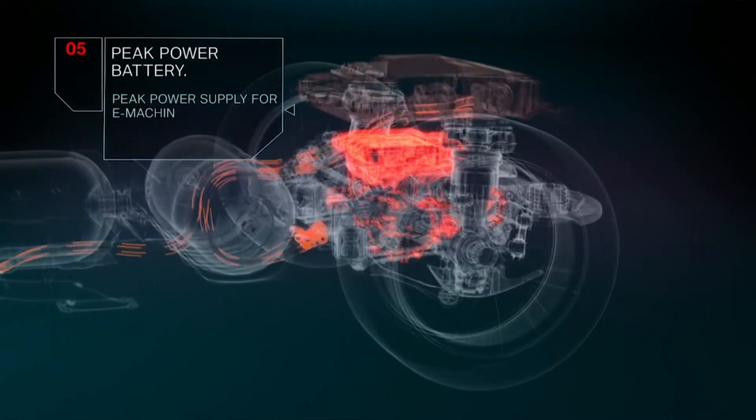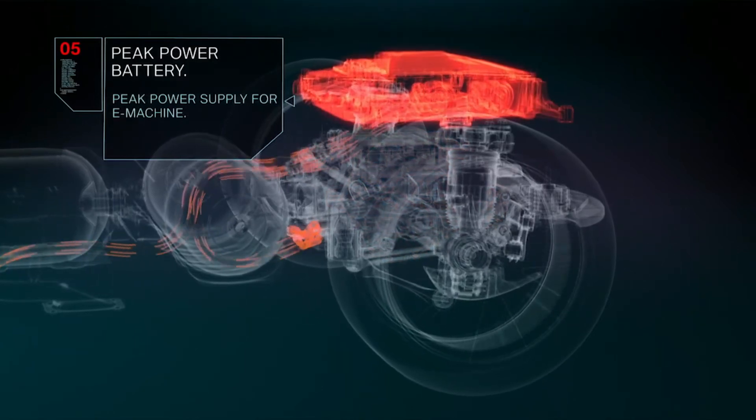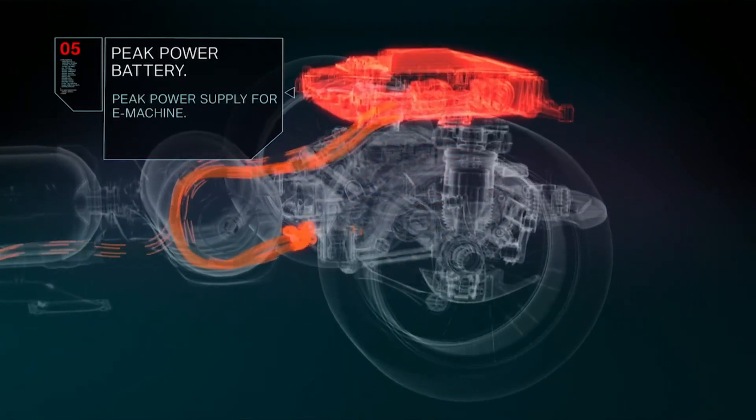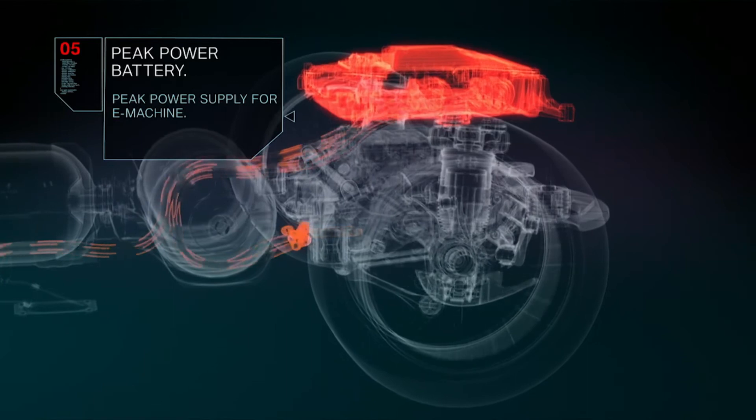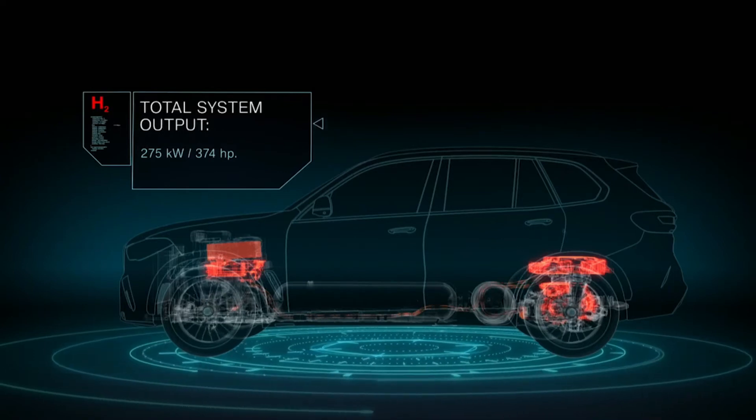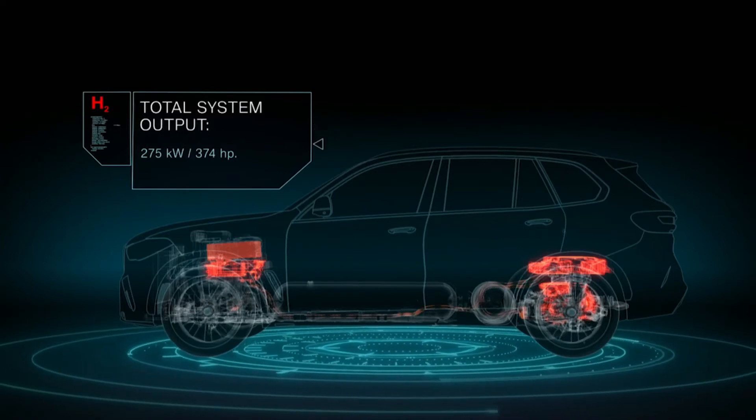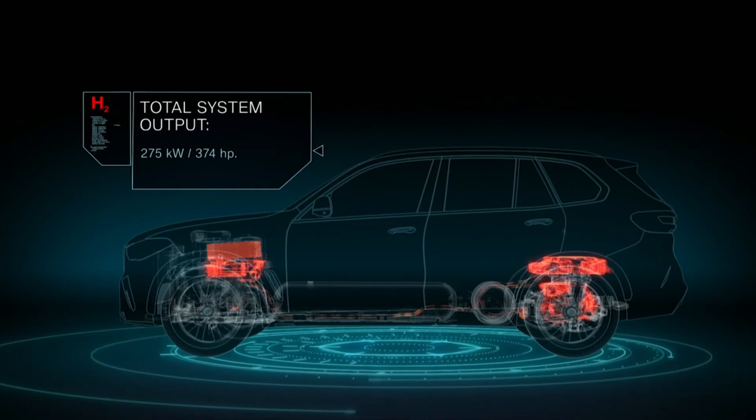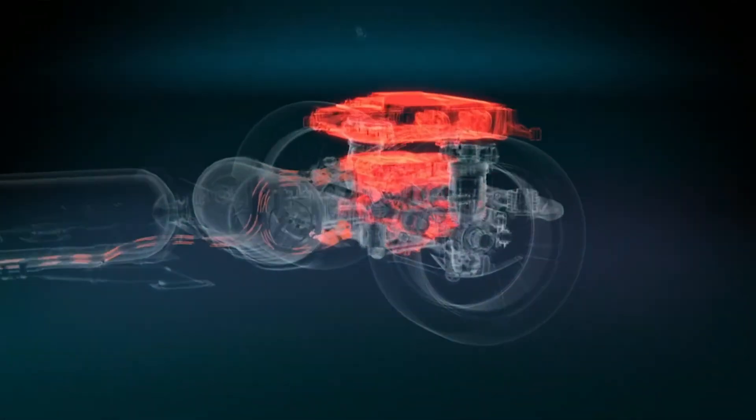The peak power battery located above the eDrive unit can supply an additional power boost on top of the electric energy from the fuel cell system. This results in a total system output of 275 kilowatts, enabling the zero emission and dynamic driving pleasure that BMW is renowned for.